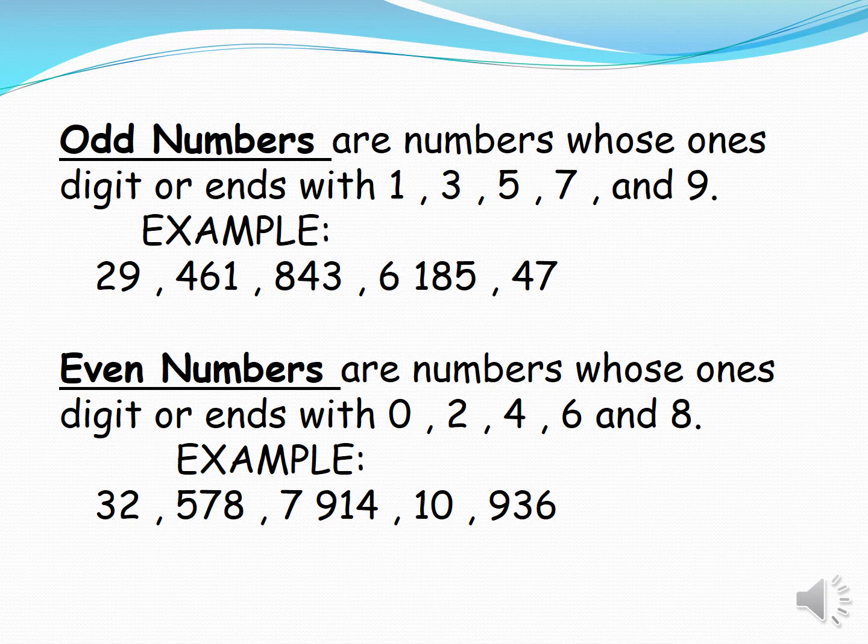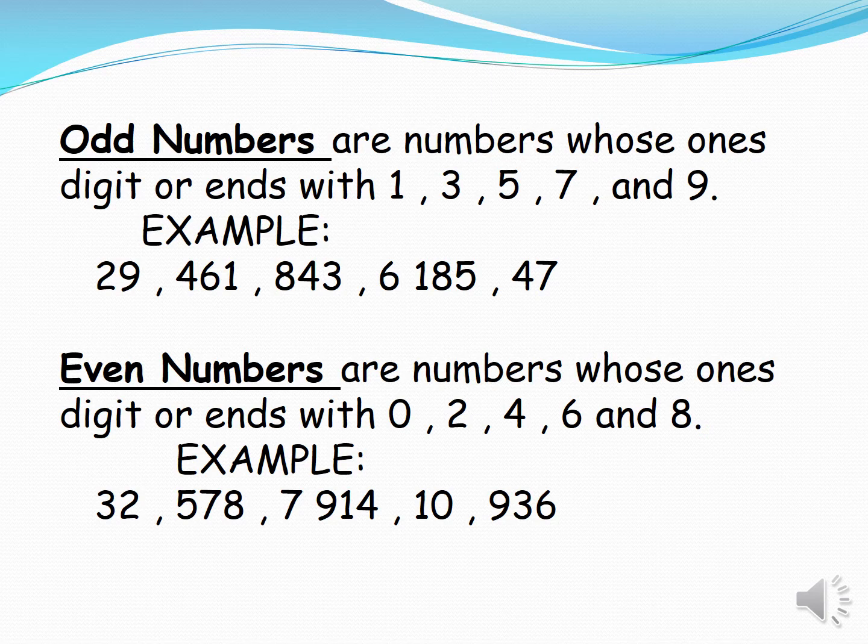Even numbers are numbers whose ones digit ends with 0, 2, 4, 6, and 8. Example: 32, 578, 7,914, 10, 936. These are examples of even numbers ending in 2, 8, 4, 0, and 6.